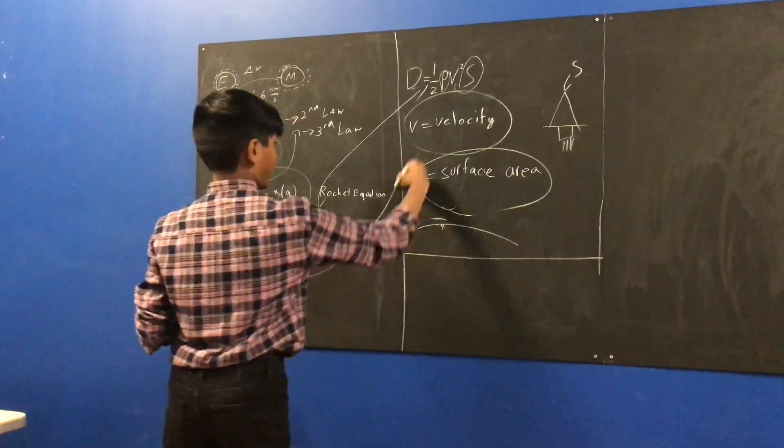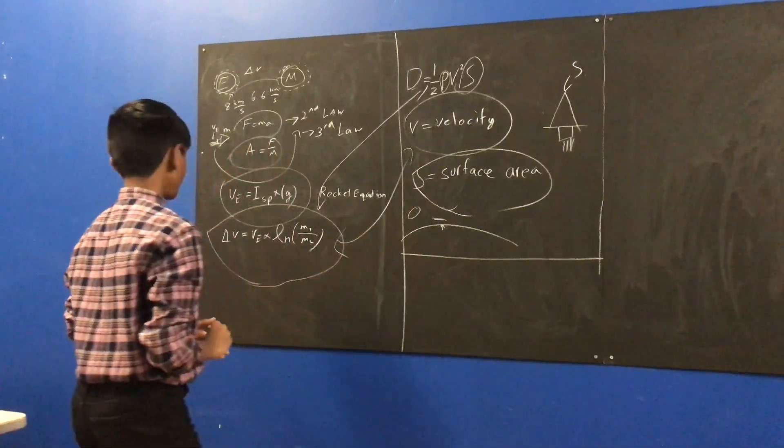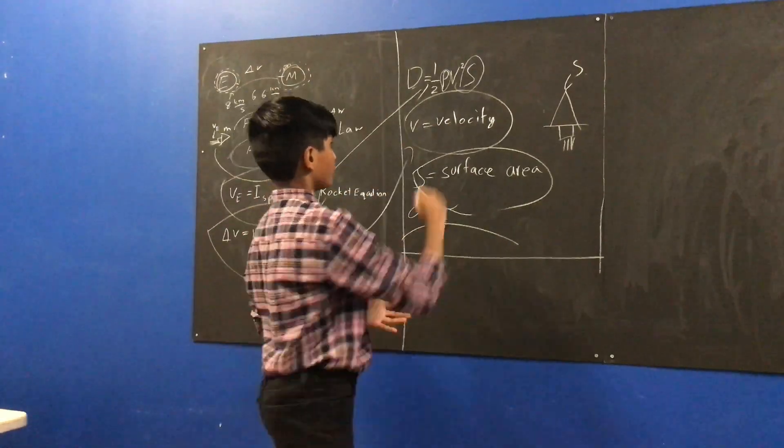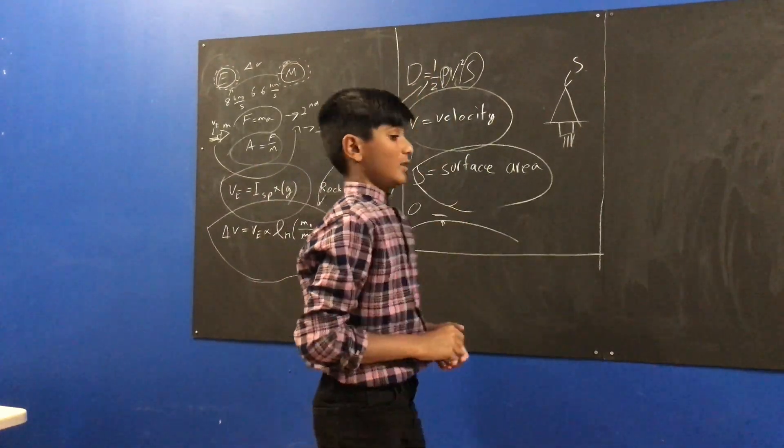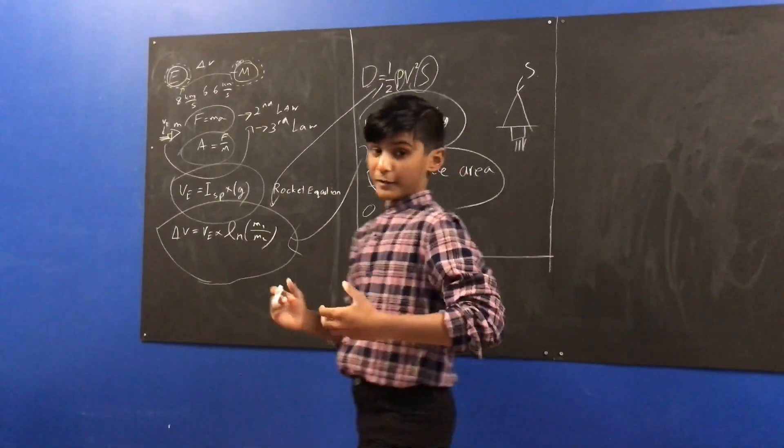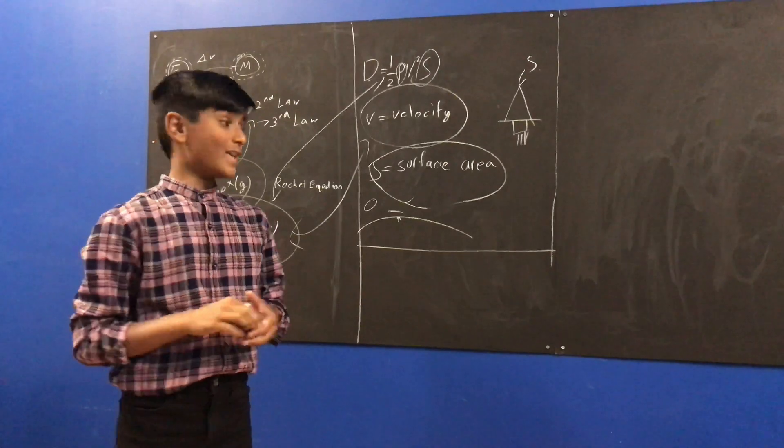And, they're actually linked, in a way. Because, to accelerate up there, to make your delta V, your drag is actually quite a big factor. There are lots of equations in rocket science. But, these two are the ones I recommend that you learn first.